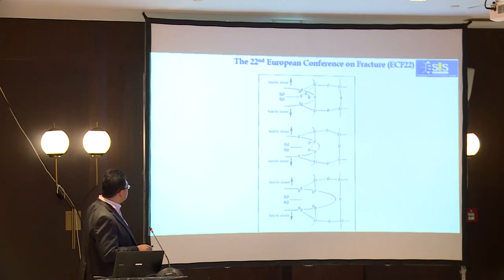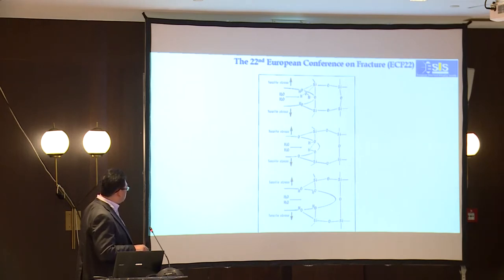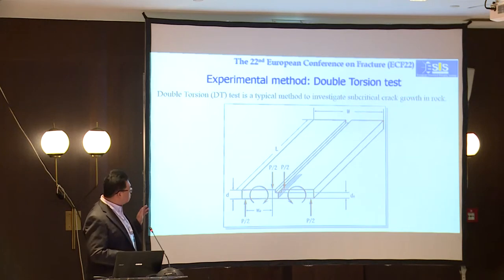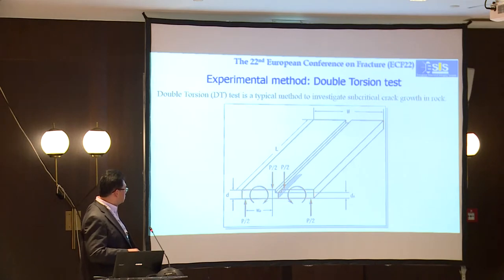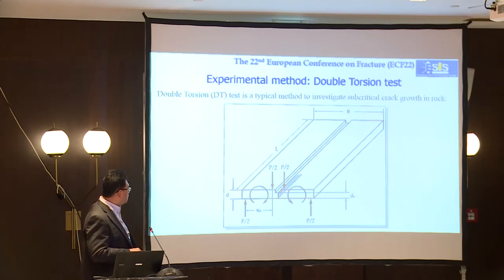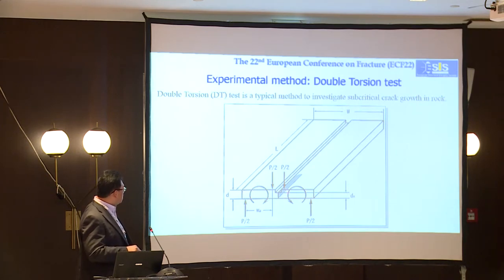This is the schematic model of stress corrosion cracking in rock. Here is the crack plane and here is the crack tip. If water exists and propagates to the crack tip, under tensile stress, bond breaking happens between Si and O, so the crack can propagate. To measure sub-critical crack growth in rock, we use the double torsion test. This figure shows the configuration of the specimen: the shape is very similar to a thin plate, and we must create one groove to guide the crack.